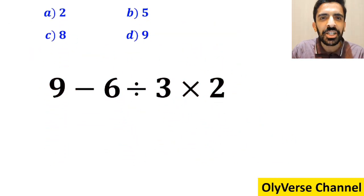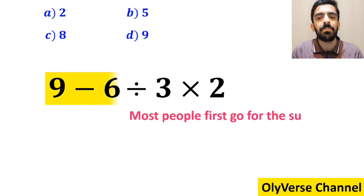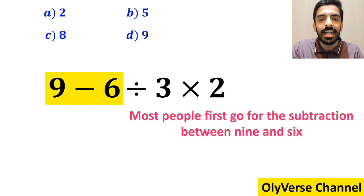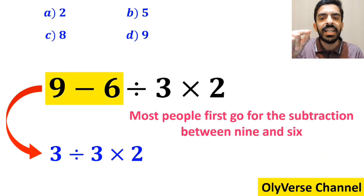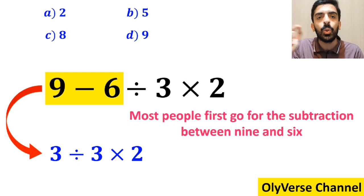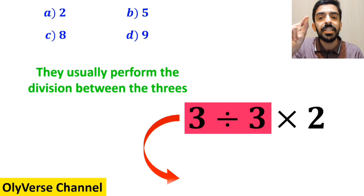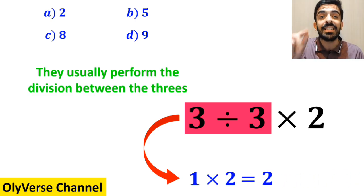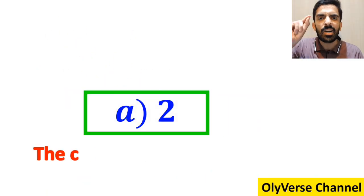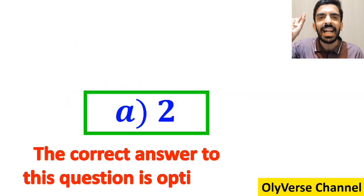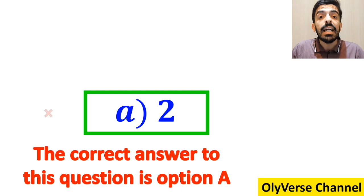Let's dive in and crush it together. To solve this question, most people first go for the subtraction between 9 and 6, and they write this expression as 3 divided by 3 then times 2. In the next step, they usually perform the division between the 3s, simplifying this expression to 1 multiplied by 2, which finally gives them the answer 2. Immediately they say that the correct answer is option a. However, it's not the correct answer to this question.